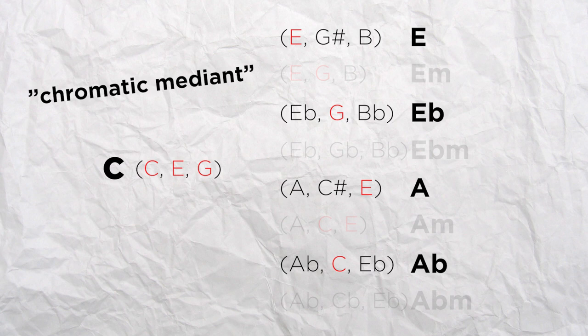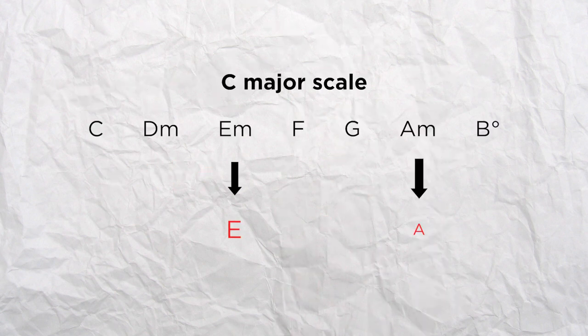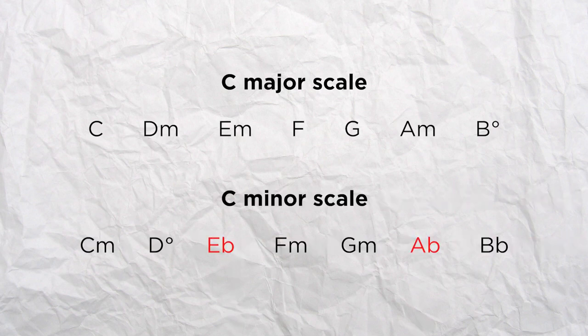One way to interpret that with classic theory is that it utilizes parallel scales. E major and A major are the parallel majors of E minor and A minor, which are already in the scale of C major. And Eb major and Ab major are from the scale of C minor, which is the parallel minor scale of C major.